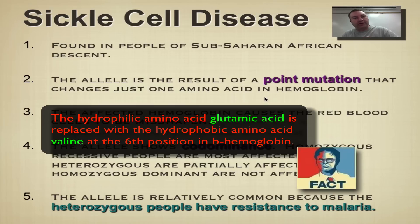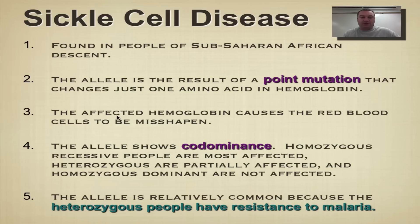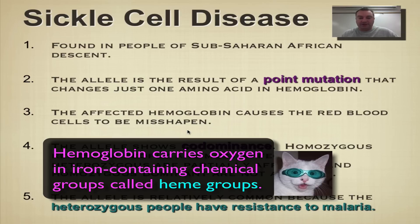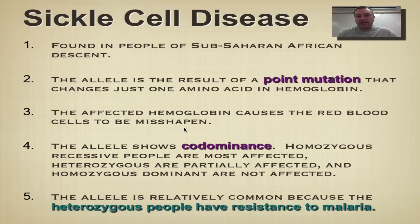Sickle cell disease is the result of a point mutation — only one letter is changed — and that affects just one single amino acid. Compare this to cystic fibrosis, where an entire codon was missing; here only one amino acid gets changed. This affects hemoglobin, the protein that carries oxygen in your red blood cells, causing them to take the wrong shape under acidic conditions — such as during vigorous exercise when increased CO2 from the Krebs cycle makes your blood slightly acidic.